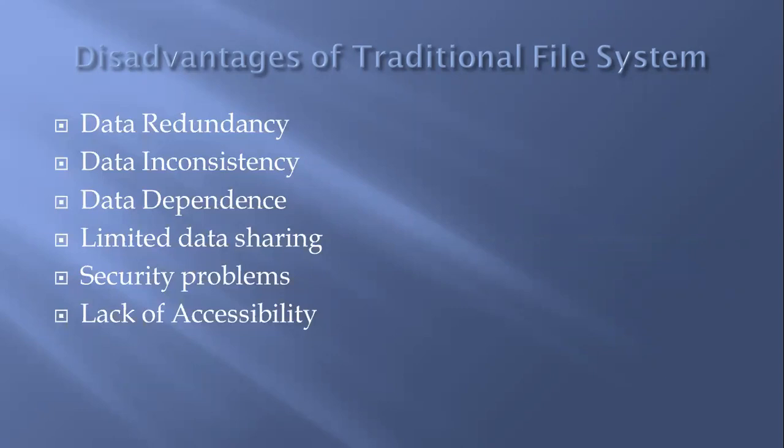A few disadvantages associated with the traditional file system, also called the flat file system, are: data redundancy — each application has its own data file so the same data may have to be recorded and stored many times; data inconsistency — the same data items appearing in more than one file do not get updated simultaneously in each file; data dependency — programs and applications in file processing systems are data dependent but the program is incompatible with the file format; limited data sharing and security problems; retrieval problems; and lack of accessibility — the data was not accessible.